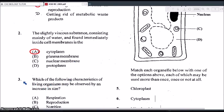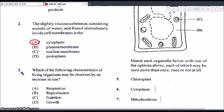So the cytoplasm is that fluid region within the cell that would carry the various cell organelles. Okay, question 3. Which of the following characteristics of living organisms may be observed by an increase in size? Is it A, respiration, B, reproduction, C, nutrition, or D, growth? So this is an easy question. So the obvious answer for that would be growth. So growth is the permanent increase in size.